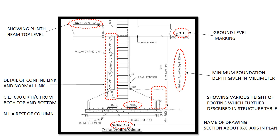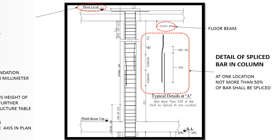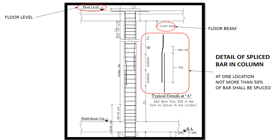Confined zones and normal zones are clearly identifiable in the section. A confinement zone in a column is a region where you require a smaller spacing of stirrups for higher ductility. Confined links are provided into 600 mm or h/6 from both the top and bottom, and the rest of the remaining part of the column is provided with normal links. The spacing of confined links and normal links are given in the structural table of reinforcement. You can see the 450 mm marking on the section, which says that vertical reinforcement is extended into the footing 450 mm horizontally.